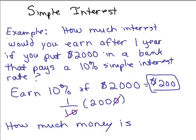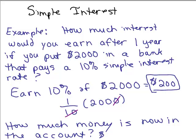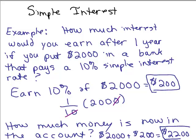How much money is now in the account? Well, you had $2,000, you earned $200, so you have 2,000 plus 200 — you now have $2,200 in the account. I wish banks paid that interest rate; it's pretty low as I write this. But if they did give you a 10% interest rate, that's what it would be.